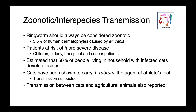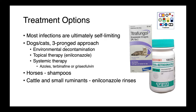Ringworm should always be considered zoonotic. Three and a half percent of human dermatophytoses are caused by Microsporum canis, and these are coming from animals. Patients more at risk of severe disease include children, the elderly, and transplant or cancer patients. It's been estimated that up to 50% of people living in a household with infected cats will develop a lesion. Interestingly, cats have also been shown to carry Trichophyton rubrum, the agent of athlete's foot, and transmission has been suspected. Transmission between animal species has also been reported, for example between cats and agricultural animals.